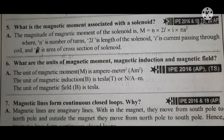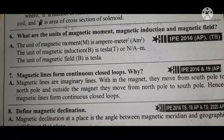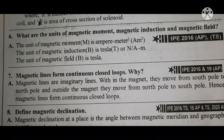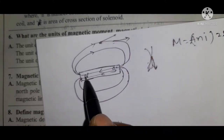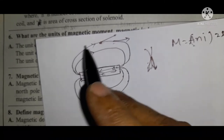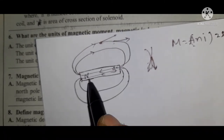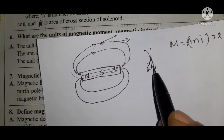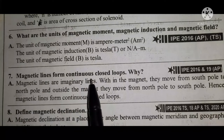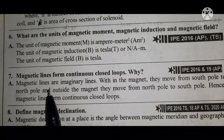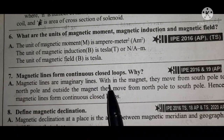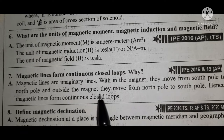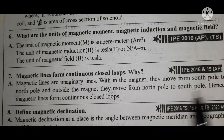Question seven: Magnetic lines form continuous closed loops — why? As discussed earlier, outside the magnet the direction of field lines is from north to south, and inside the magnet it is from south to north, forming a closed loop. Magnetic lines are imaginary lines; within the magnet they move from south to north pole, and outside the magnet they move from north to south pole. Hence magnetic lines form continuous closed loops.